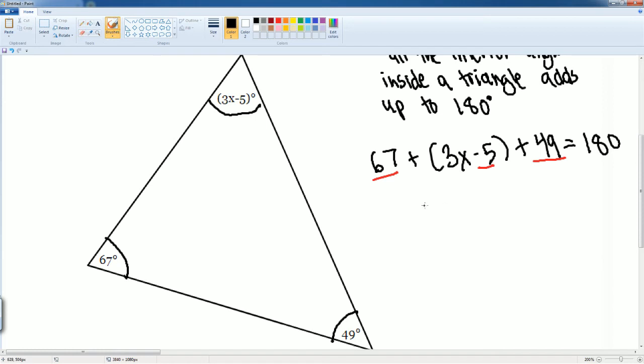So that became 111 plus what is left is the 3x is going to be equal to 180 degrees. We can now subtract 111 to both sides. In that process, this does cancel out, leaving you with 3x is equal to 180 minus 111. That gets us 69.